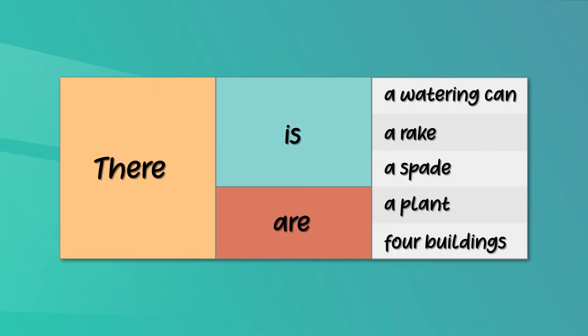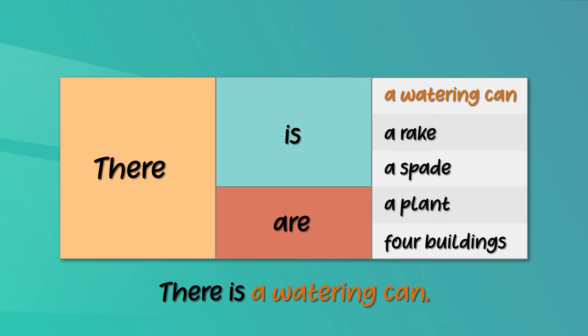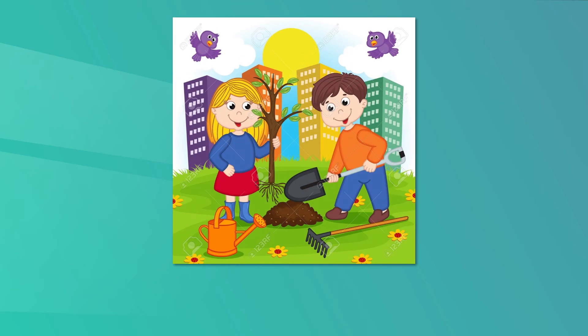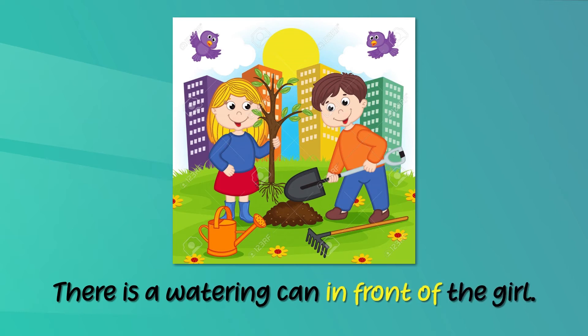Shall we write about the objects and animals now? This time can you try? Make use of this substitution table to help you. Let's do the first one together. What about this watering can? You can say 'there is a watering can.' Can you describe the position of this watering can with the help of a preposition? Look at the picture and see where it is. So you can say 'there is a watering can in front of the girl.' Now you can try writing sentences about the other objects. You can pause the video, study the picture and the substitution table, and do it now.